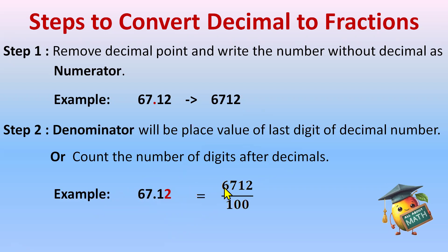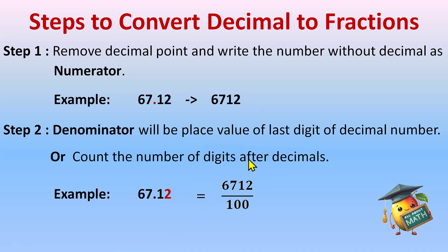We write 6712 divided by 100. The other way is to count the number of digits after the decimal: there are two digits — one and two — so two zeros come with 1, giving 100. Either method — writing the place value or counting the digits — gives the same correct answer.